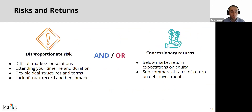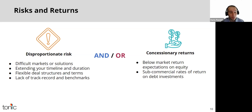Let's take a closer look at these elements. Disproportionate risk can take various forms, including investing in difficult markets or unproven solutions, extending your timeline as an investor or accepting an uncertain duration for investment, being flexible with deal structures and accepting unconventional terms, or investing when there is a lack of track record, benchmarks, and reference points.